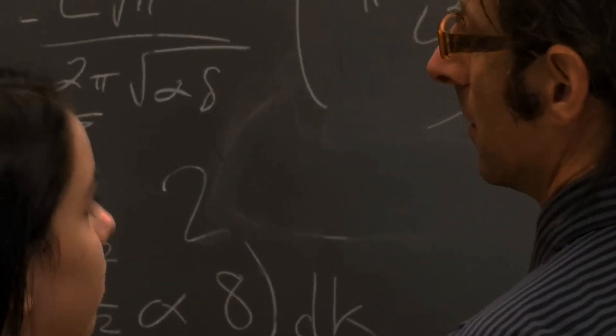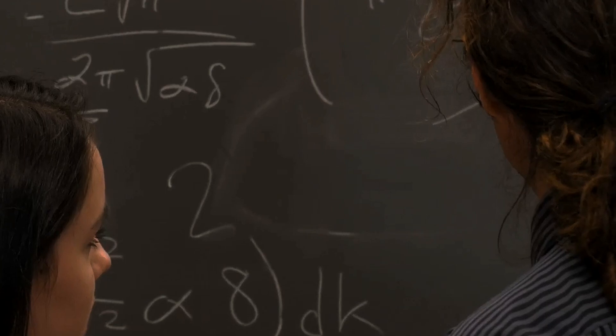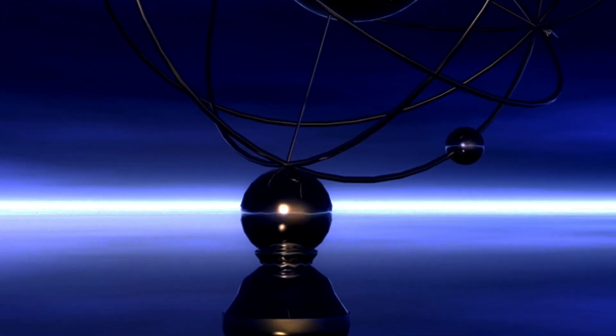This began to change as mathematicians began to consider two novel possibilities at around the same time, that there could be extra spatial dimensions beyond the three we recognize, and that space could be curved as well, rather than spatially flat.